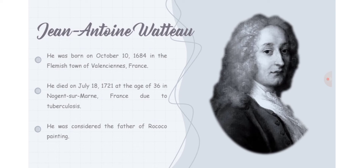He was born on October 10, 1684, in the Flemish town of Valenciennes in France. He died on July 18, 1721, at the age of 36 in Nogent-sur-Marne, France, due to tuberculosis. One fact about him is that he was considered the father of Rococo painting.